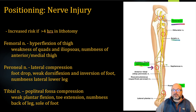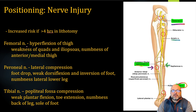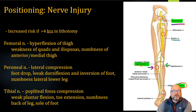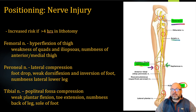With the femoral nerve, hyperflexion of the thigh can put extra pressure there. Injury to the femoral nerve can create weakness of the quads and iliopsoas, so flexion of the hip, as well as numbness of the anterior and medial thigh. The peroneal nerve — lateral compression from the upper part of the footrest and boot — can lead to foot drop, weak dorsiflexion and inversion of the foot, and numbness of the lower lateral leg. Injury to the tibial nerve from pressure in the popliteal fossa can create weak plantar flexion, toe extension, and numbness along the back of the leg and the sole of the foot.